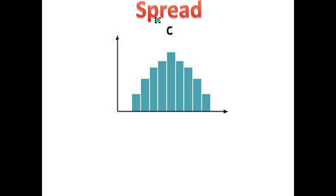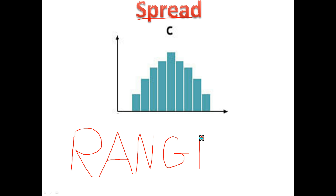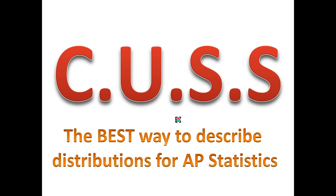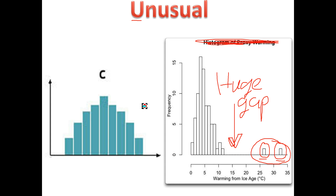The final one is spread. Spread is pretty straightforward — it's just the range. It's how much data does this cover. So if it starts at 10 and goes to 90, we say this graph has a spread of 80 values, from 10 to 90. That's a perfectly fine answer to describe the spread. So to summarize: if you're given a question on the AP Statistics test that asks you to describe a graph or distribution, just start cussing — describe the center, the unusual values, the shape, and the spread.